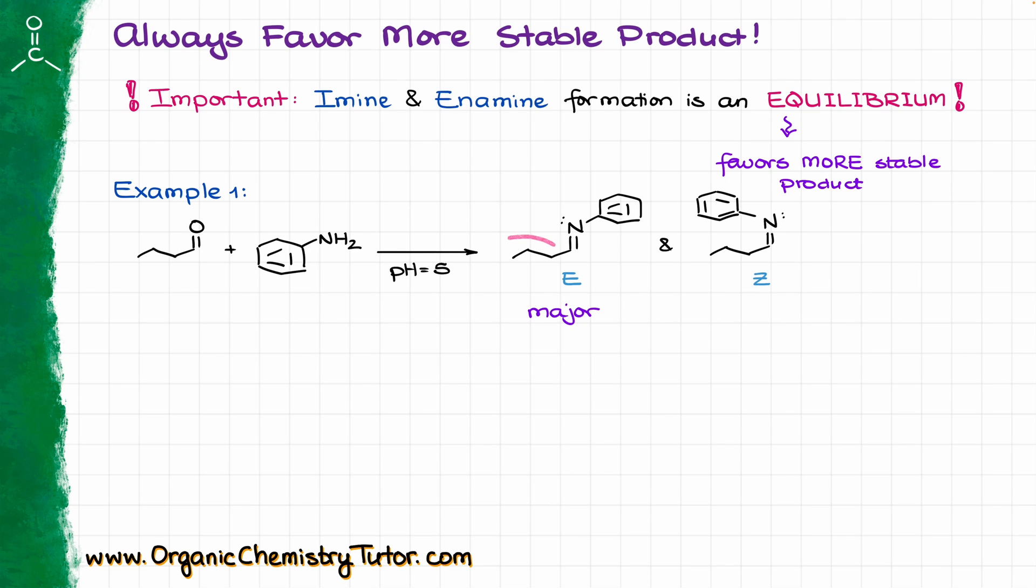In this case, in the E product, my two bulkier groups are further apart from each other, so they are not going to be experiencing much of the steric hindrances of any sort. On the contrary, in the case of my Z product, I have two of my bulky groups relatively close to each other, which is going to cause steric hindrances and steric interactions, which is not thermodynamically stable. So in this case, the E product is going to be our major product and not the Z product simply due to the sterics.